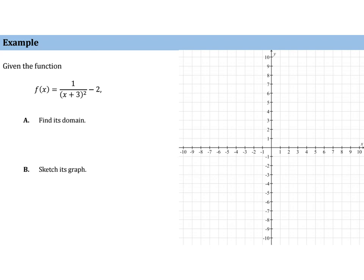will shift that to the left, and x can't be negative 3. Of course, we can just set the denominator equal to zero and see that. So the domain will be negative infinity to negative 3 union negative 3 to infinity.